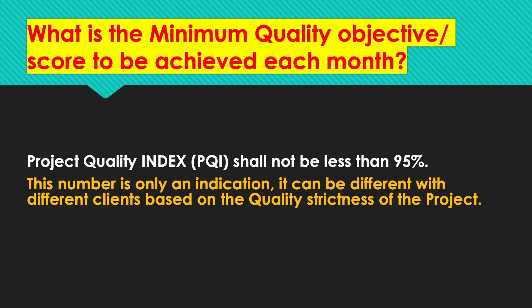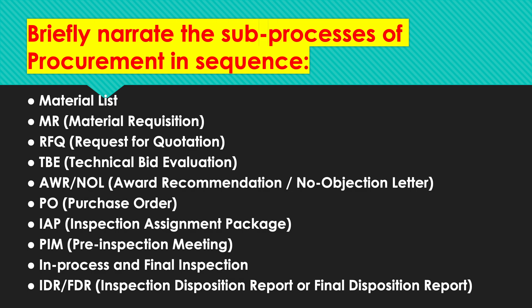Briefly narrate the sub-processes of procurement in sequence. The basic key sub-processes are: a material list is prepared, then a material requisition (MR) is prepared, then a request for quotation (RFQ) is sent to at least three vendors or manufacturers, then we take the lowest bid, followed by technical bid evaluation (TBE). After TBE, the order is awarded to the chosen vendor (AWR). We then need to achieve the NOL — No Objection Letter — from the client, then issue a purchase order.